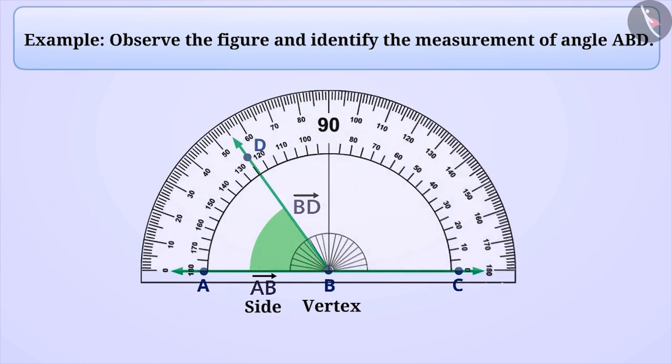We can also see that the line shown on the straight line of the protractor is completely covering side AB of the angle and the midpoint of the straight side of the protractor is also falling on the vertex B of the angle. This means the protractor can be placed correctly on the angle.